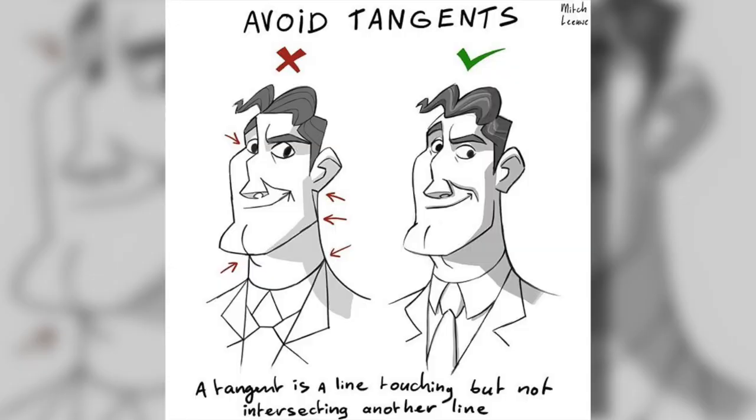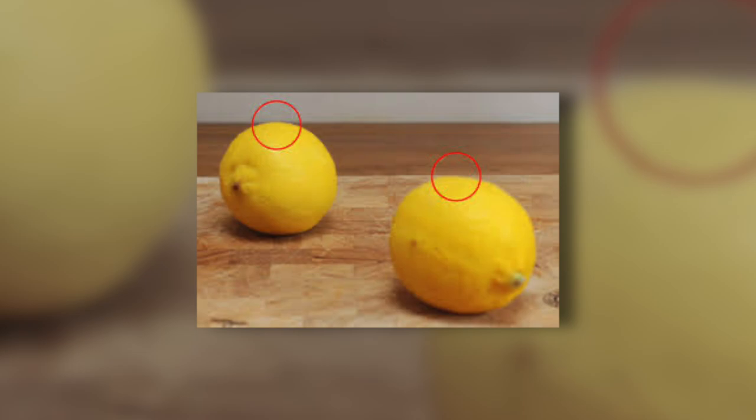The issue a lot of people run into when they're adding lines throughout their 3D is they run into tangents. A tangent is essentially the relationship between two lines or two subject matters within a single image. And there are a bunch of different tangents out there. When you start running into tangents, they begin to negatively affect your image — they either make things look more clustered and confusing, or they make things look flatter.